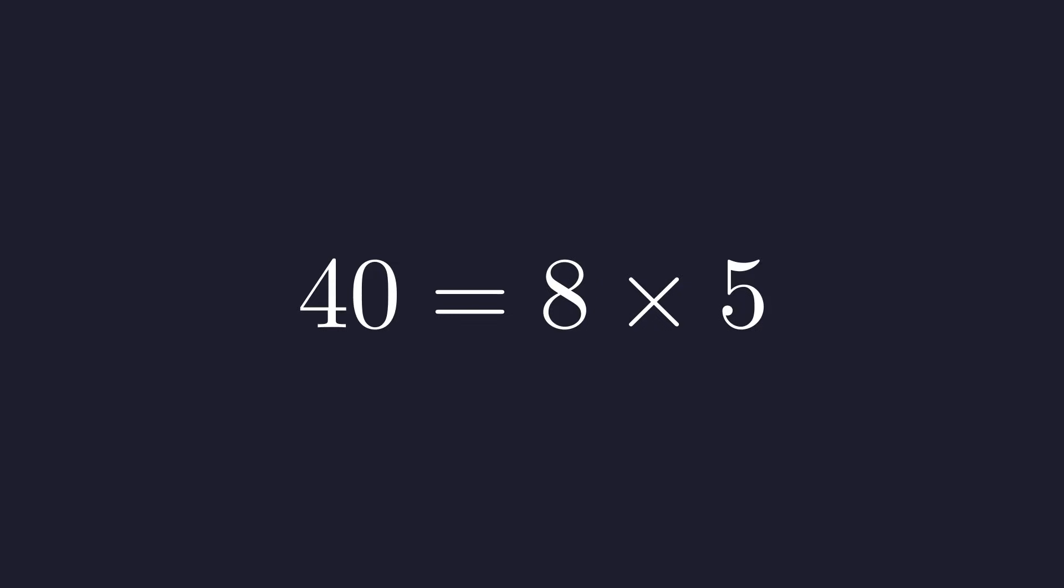We can write 40 as 8 times 5, and since 8 is 2 cubed, the prime factorization of 40 is 2 cubed times 5.